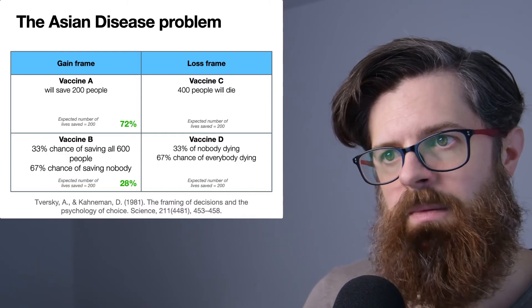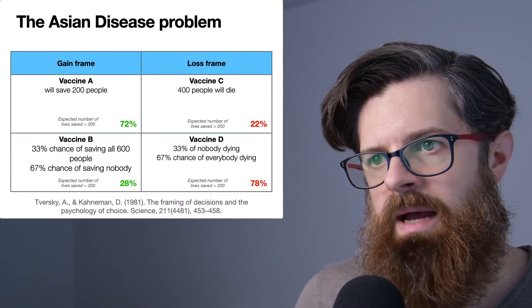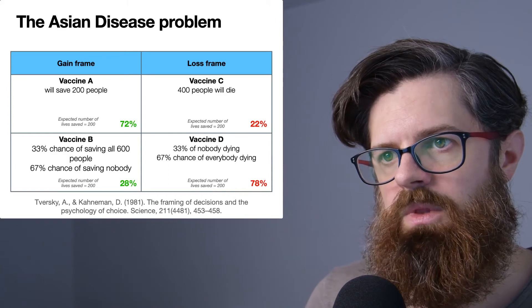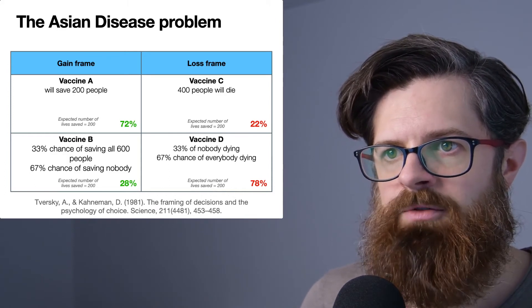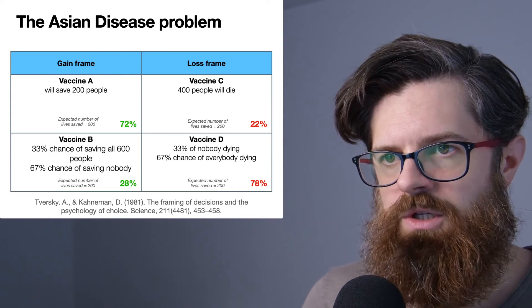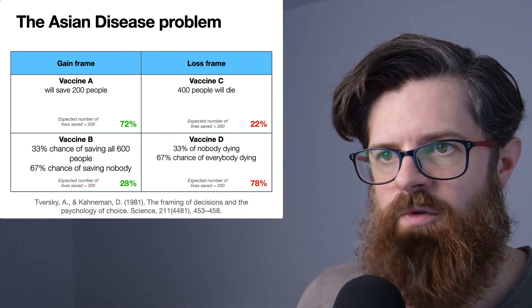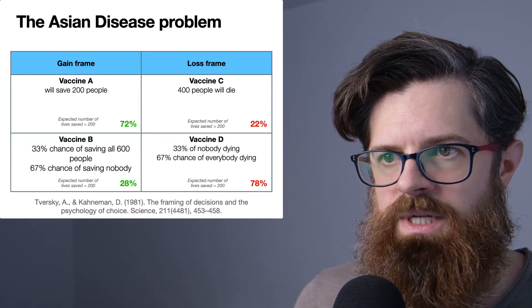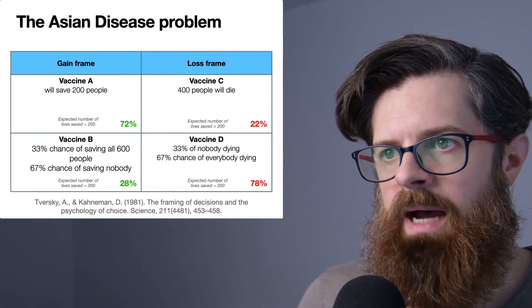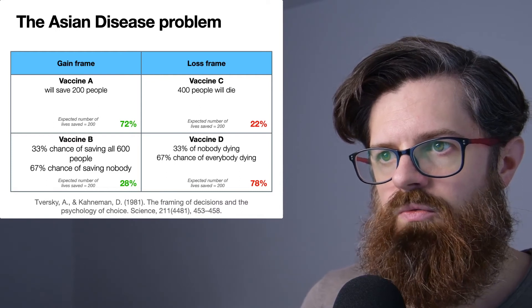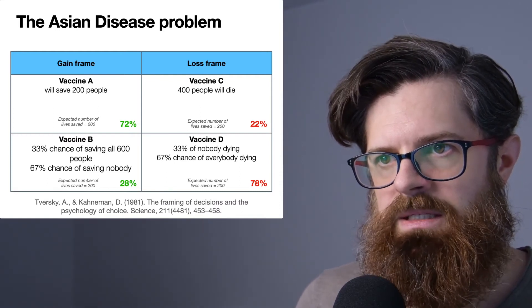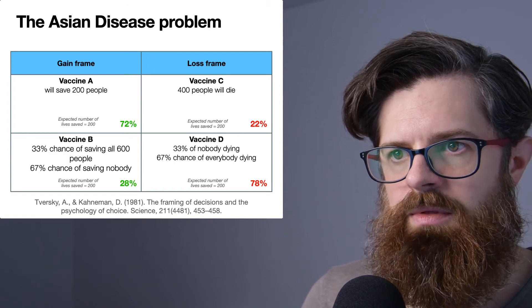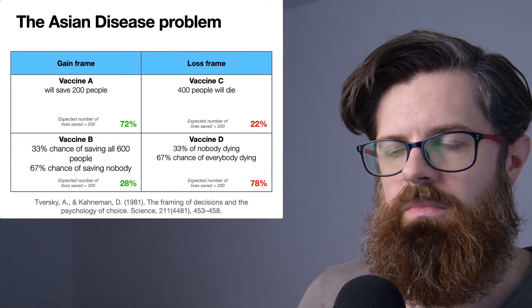If we look at the proportion of people who chose Vaccines C and D, we see that this has reversed. Now we only have 22% people going for the sure thing—the sure vaccine of 400 people will die—and we have 78% of people who are going for the risky thing. What we can see is that this kind of preference for risk aversion in the gain domain has flipped in the loss domain. Now people are actually preferring the risky choice.